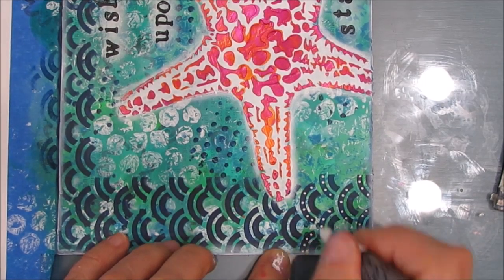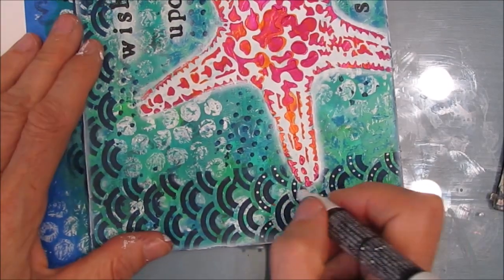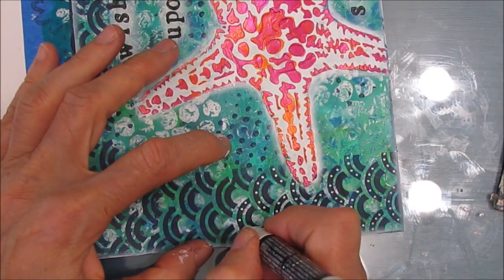Now I wanted to add a little more detail, so I grab my white posca pen and I'm adding some dots on that Prussian blue stenciling with the wave stencil.